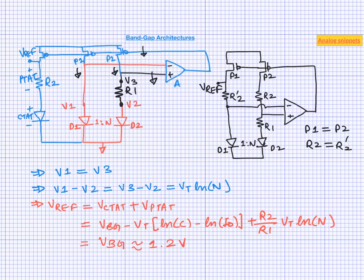In fact, there are many more ways to rearrange this circuit. All these configurations have their own pros and cons, which we will discuss in another video. Bandgap circuits are not only used to generate reference voltages but also bias currents — we can reuse the PTAT current flowing in these branches as a bias current.